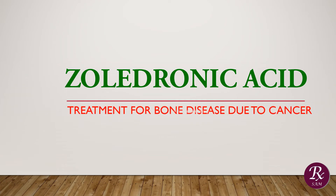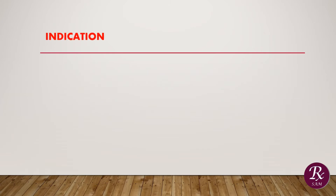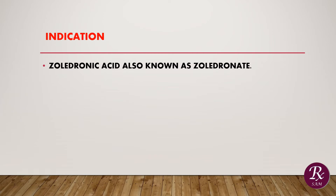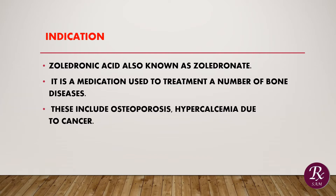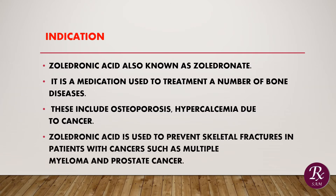Zoledronic Acid is used in treatment for bone disease due to cancer. Indications: Zoledronic Acid, also known as Zoledronate, is a medication used to treat a number of bone diseases. These include osteoporosis and hypercalcemia due to cancer. Zoledronic Acid is used to prevent skeletal fractures in patients with cancer such as multiple myeloma and prostate cancer.